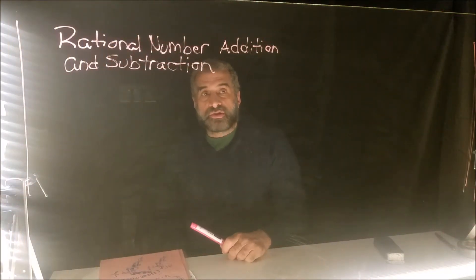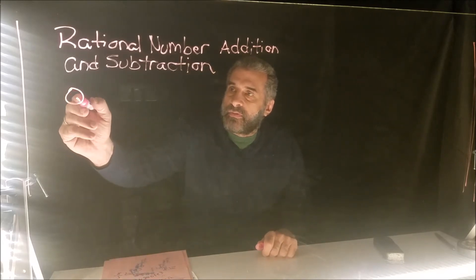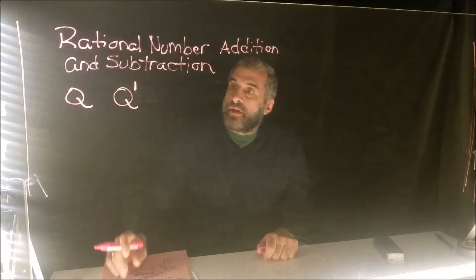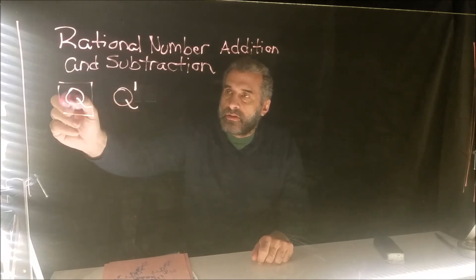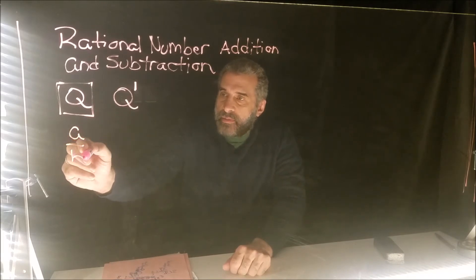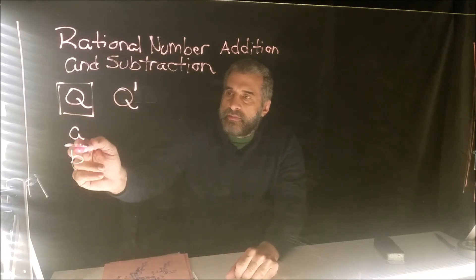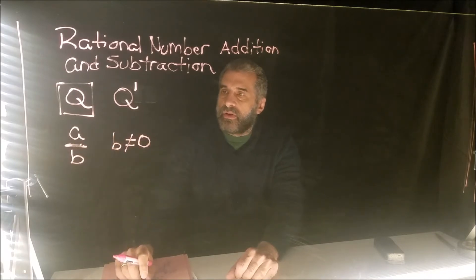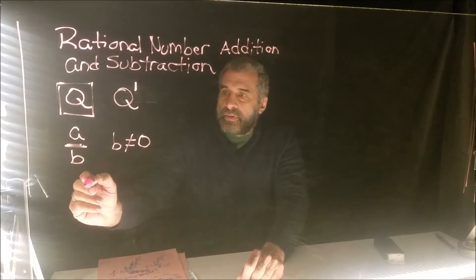Here's our video on rational numbers — we're going to add and subtract them. Q is the symbol for rational numbers; with a small superscript it means irrational. Rational numbers have to be able to be made into a fraction a/b, where b cannot be zero, or else it's undefined.